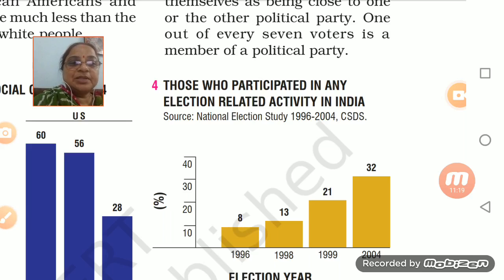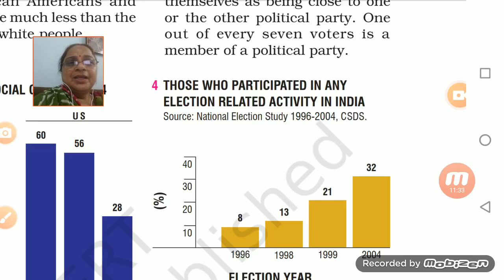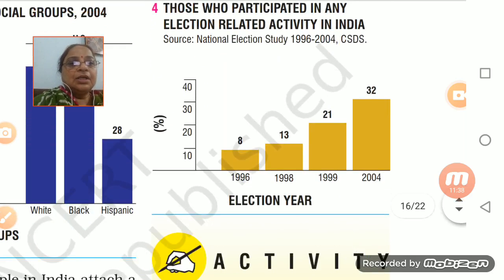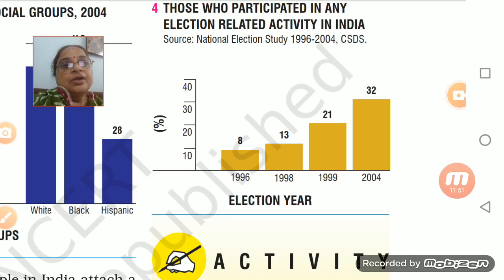Looking at election-related activities, in 1996 there were 8% participating, in 1998 there were 13%. Before this, people had very little involvement — politics se logo ka koi lena dena hi nahi tha. But by 2004, most of the people were attached to some or the other political party. So you can understand how this trend has been increasing.